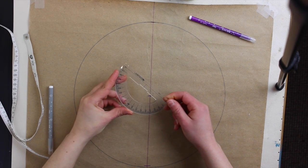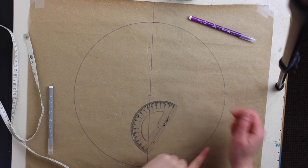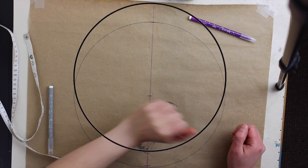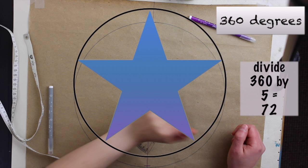Alright, so now you're going to need a protractor for making a star. So let's stop for a minute. Here is our circle—it has 360 degrees. To make our star, it has five points. So we need to divide 360 by five, which gives us 72 degrees.